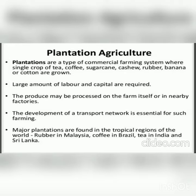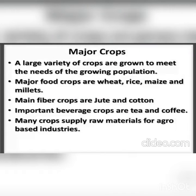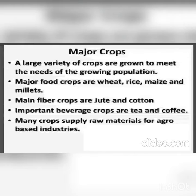Major plantations are found in the tropical regions of the world: rubber in Malaysia, coffee in Brazil, and tea in India and Sri Lanka. Here we have a picture of a tea garden on the gentle slopes of a hilly region.